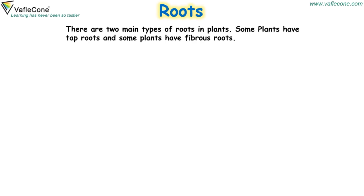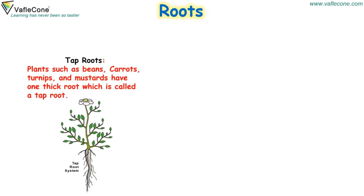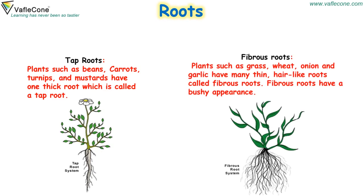Roots. There are two main types of roots in plants: tap roots and fibrous roots. Tap roots: Plants such as beans, carrots, turnips and mustards have one thick root which is called tap root. Fibrous roots: Plants such as grass, wheat, onion and garlic have many thin, hair-like roots called fibrous roots. Fibrous roots have a bushy appearance.